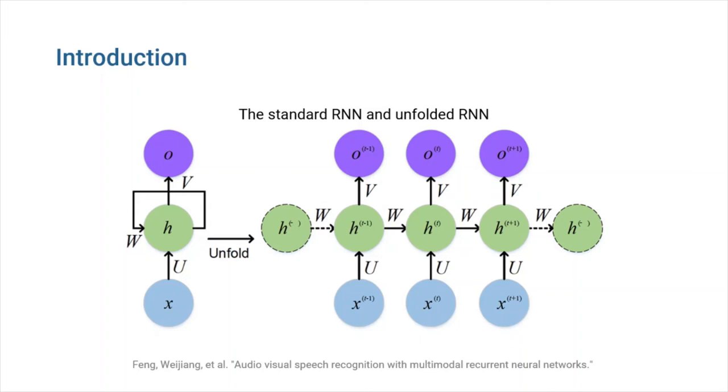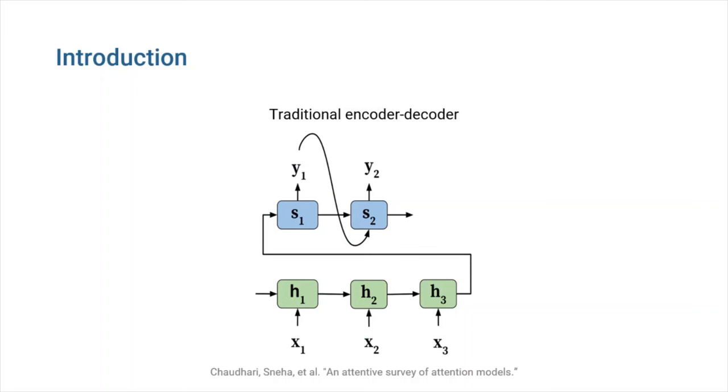Tasks like machine translation were traditionally handled by sequence-to-sequence architecture. Sequence-to-sequence is a neural net that transforms a given sequence of elements, such as the sequence of words in a sentence, into another sequence. Sequence-to-sequence models consist of an encoder and a decoder. The encoder takes the input sequence and maps it into a higher dimensional space. That abstract vector is fed into the decoder which turns it into an output sequence.